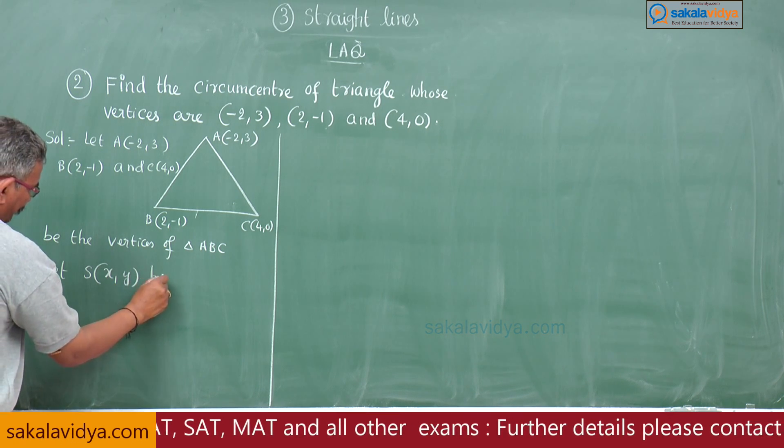be the vertices of triangle ABC. Let S(x, y) be the circumcenter of triangle ABC. So this is the circumcenter, S(x, y). SA = SB = SC.